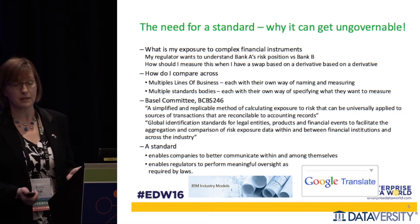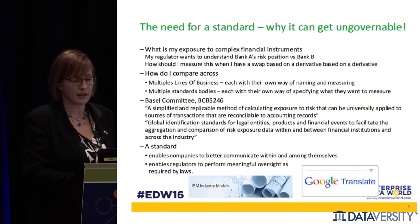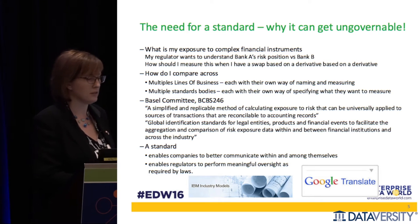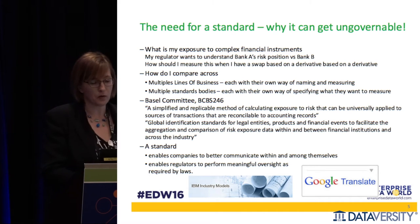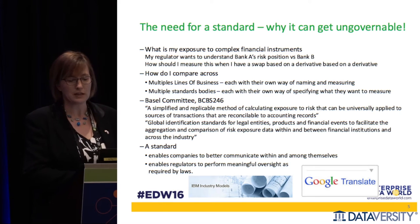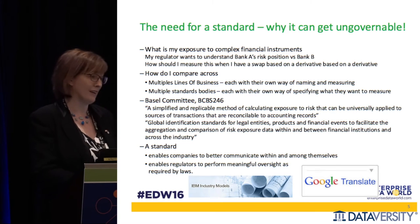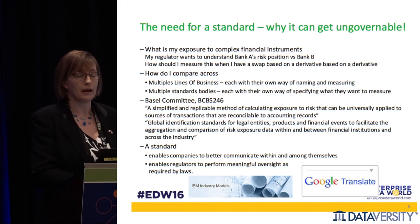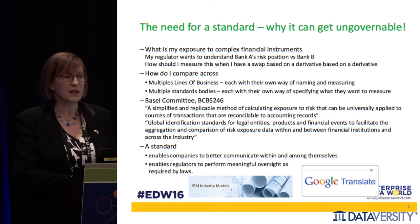What Basel says they themselves want is a simplified and replicable method of calculating exposure to risk that can be universally applied to sources of transactions that are reconcilable to accounting records. Sounds easy, doesn't it? But it's not so easy. We also need to figure out who the parties are in various transactions — they're looking at global identification standards. So what we need is a standard, something that helps us communicate and define exactly what a client is, or what a credit default swap is.